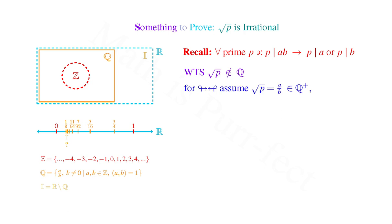For contradiction, let's assume √P is a positive rational number that can be expressed as a quotient of A over B, where A and B are relatively prime. That is, their greatest common factor is 1.